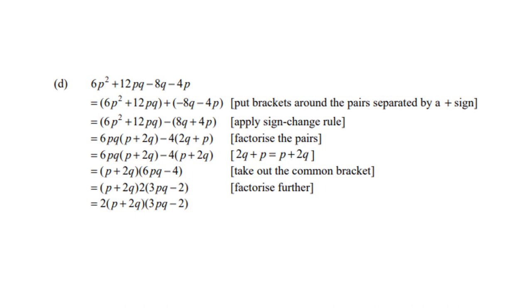Look at the last one, number d: 6p² + 12pq - 8q - 4p. Again, if I group the first two and the last two with a plus in the middle, then for the first two, 6p is a common factor. For the second two, I take out negative 4 and end up with 2q + p. Remember, p + 2q and 2q + p is exactly the same. So there you are, the common factor is p + 2q or 2q + p, doesn't matter. You're left with 6p - 4. And then, of course, if you take out 2 as a common factor for the second bracket, you get 3p - 2. Therefore, the final answer is 2(p + 2q)(3p - 2).